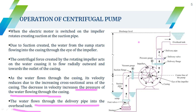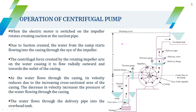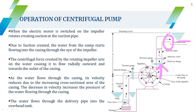The increased pressure causes water to flow through the delivery pipe into the overhead tank. This is how the centrifugal pump works — the same principle as pumps used at homes to transfer water from the sump to the overhead tank. The impeller rotates, suction is created, water enters the volute casing, centrifugal force directs it to the delivery pipe and delivery valve, and it fills the overhead tank.